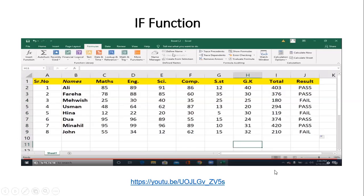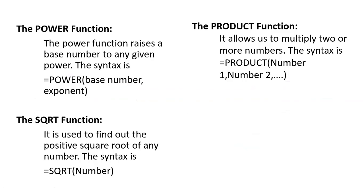Next comes the POWER function. The power function raises a base number to any given power. The syntax is equals POWER, brackets, base number comma exponent. We need two numbers to take power off.